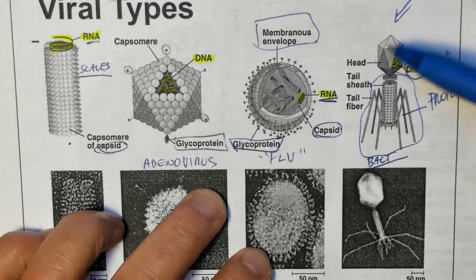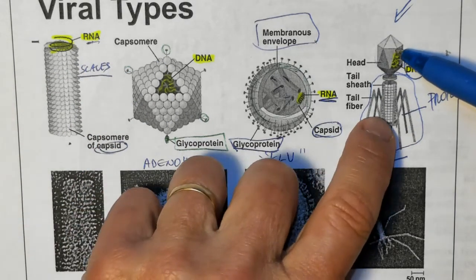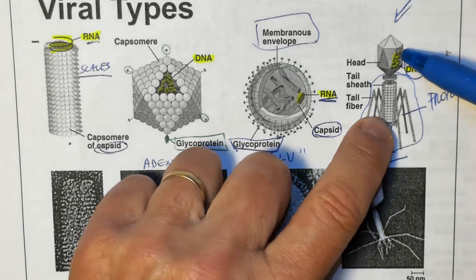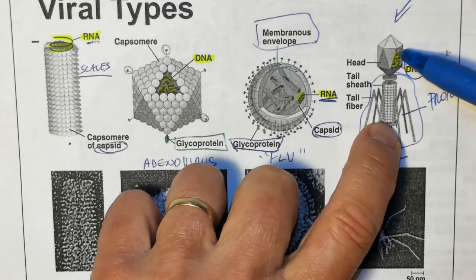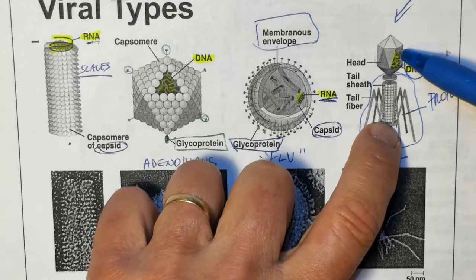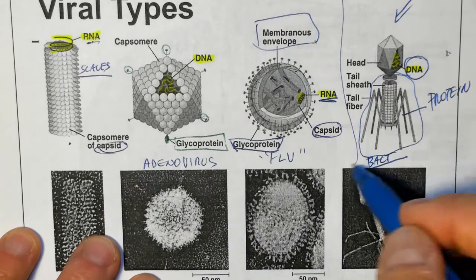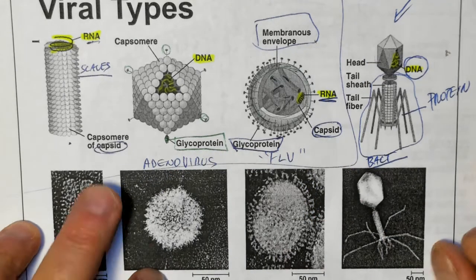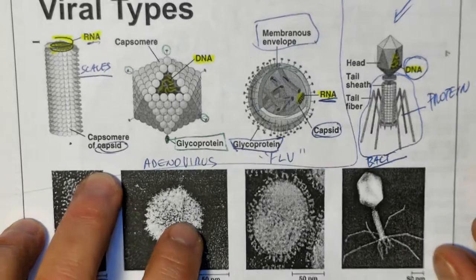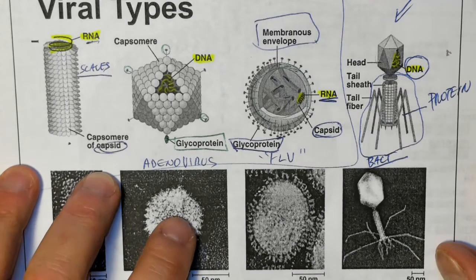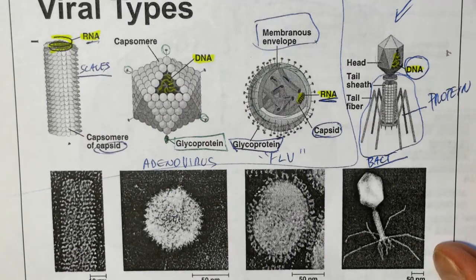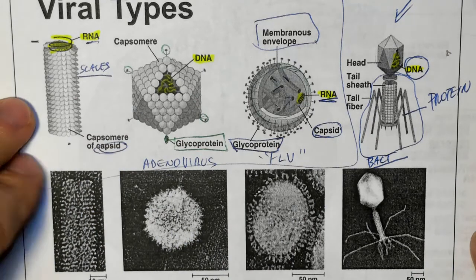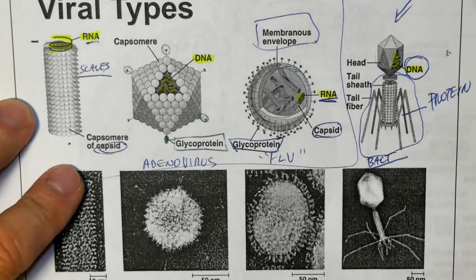Bacteriophages are unique in the way that they do not enter the cells — they just inject their nucleic acid into the cells. Pretty much every other virus that we know is going to enter your cells. In all the eukaryotic viruses, they are going to go inside the cells because our cells are bigger and the system is going to be more complex.